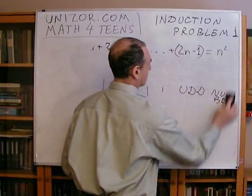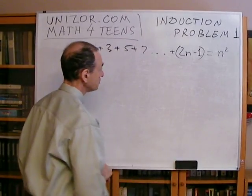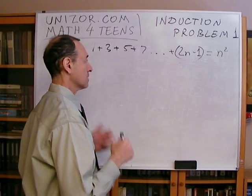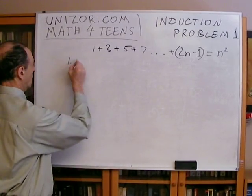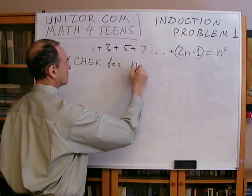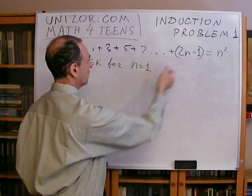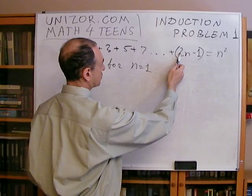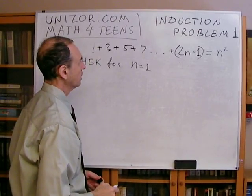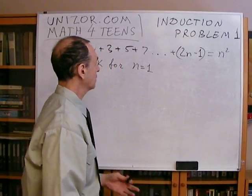This is the problem. This is the formula which we are trying to prove. If you remember, the method of mathematical induction consists of three steps. Step number one: we check for n equals one. Well, let's check it. For n equals one, I'm supposed to have only one member on the left. n times two is two, minus one is one. So, this is the generalized expression for the first member only. n equals one. On the left, I have one. On the right, I have one squared, which is one. Checks. Fine. No problem.